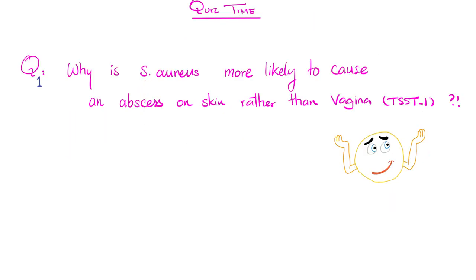Before we start, let's answer the questions from the previous video. Question one: Why is Staphylococcus aureus more likely to cause an abscess on the skin rather than in the vaginal canal? While Staph can grow on aerobic and anaerobic media, it prefers aerobic conditions. There is more air on your skin surface compared to deep in the vaginal canal. Also, the vaginal canal is more acidic, making it harder for Staph aureus to grow there.